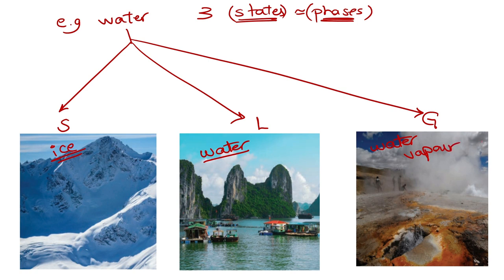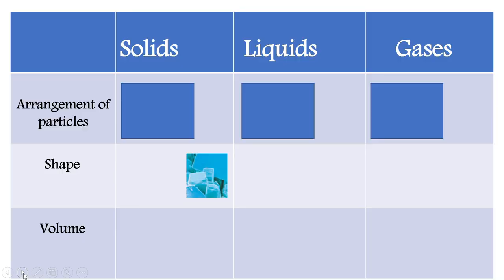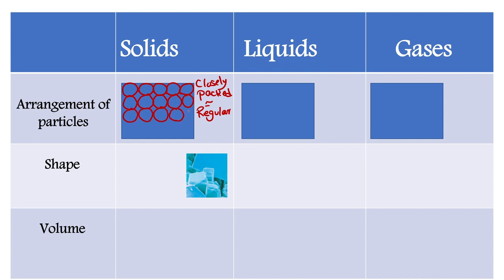Let's compare the three states of matter — solids, liquids, and gases — in terms of the arrangement of particles. The solid particles are closely packed, arranged in a regular manner called a crystalline lattice. When drawing solid particles, they should be in a regular pattern, very close to each other, with circles of the same size representing the particles.